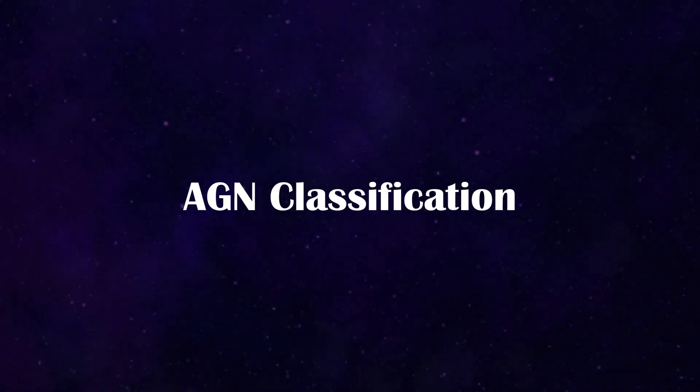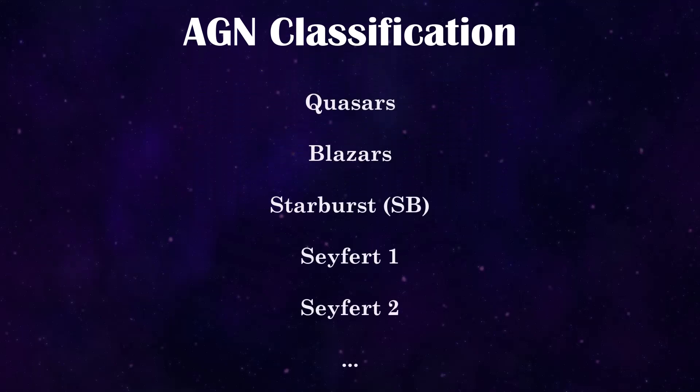There are many different classifications of AGN which you have likely heard of before. These include things like quasars, blazars, starbursts, Seyfert type 1 and 2s, radio AGN, and so on.